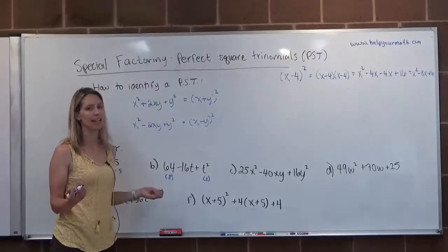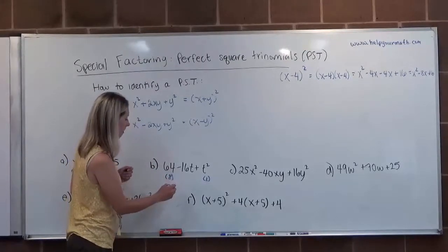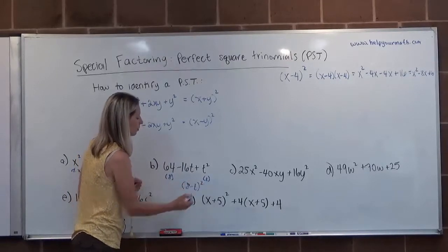I see the subtraction, which just indicates that we're going to have subtraction in our binomial. So that would be 8 minus T quantity squared.